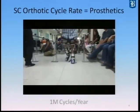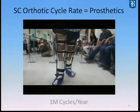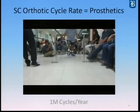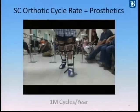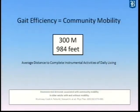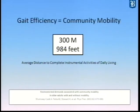In a stance control KAFO, we have to be aware that our components now cycle at a rate equitable with prosthetics — always considered to be one million cycles a year. From the standpoint of having a dynamic device, when we're trying to restore community mobility for a patient, the literature tells us that the average distance to complete instrumental activities of daily living is 300 meters or 984 feet. So that orthotic knee joint is locking and unlocking for every step in that patient's renewed ability to be a community ambulator.